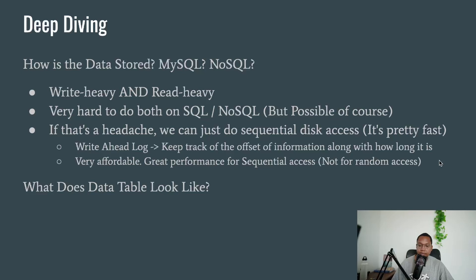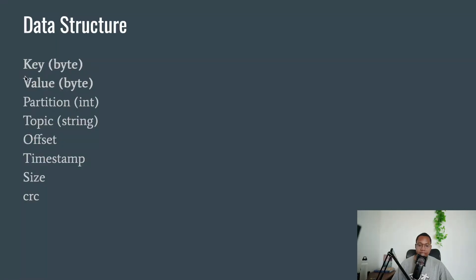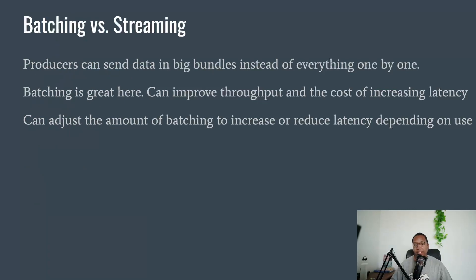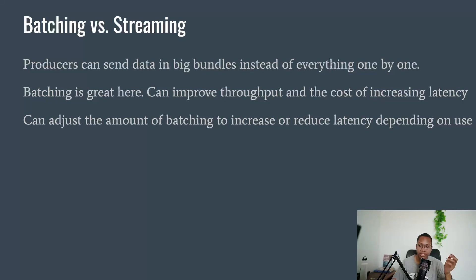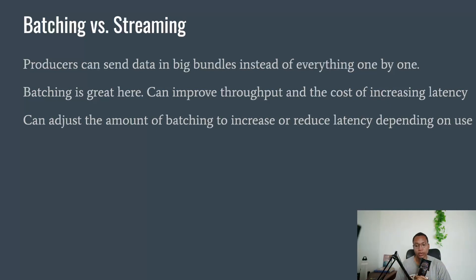The data table is going to have a key-value structure with a partition ID, topic, offset, timestamp, and size. There's also the option of batching versus streaming. Should we send messages as soon as they're sent? The benefit of streaming is low latency - you get the message as soon as it arrives. Or you could do batching, where you store the messages and bundle them up, then send all of it at once. That lets you send way more information over a set period of time, giving you throughput increase, but you decrease latency because you have to wait for the batch to fill up before sending.